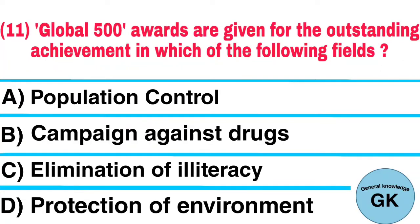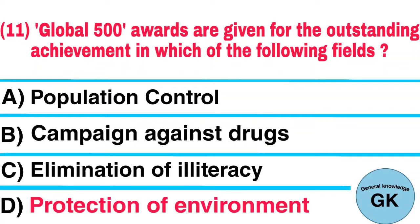Question number 11. Global 500 awards are given for the outstanding achievement in which of the following fields? A. Population control, B. Campaign against drugs, C. Elimination of illiteracy, D. Protection of environment. Answer: Protection of environment.